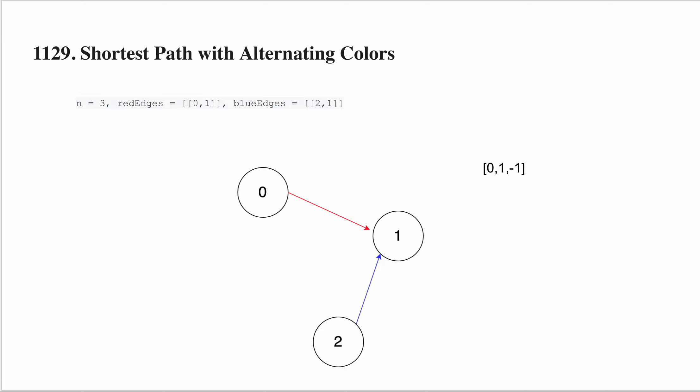Welcome to CodeSutra. In this video, I will be explaining LeetCode problem number 1129, shortest path with alternating colors. Even if you don't know what breadth-first search is, I will be explaining step by step the answer to this solution.